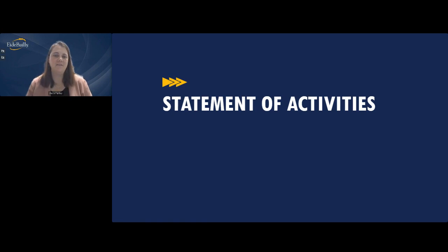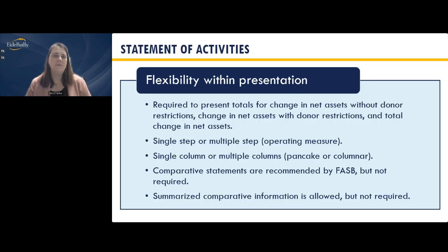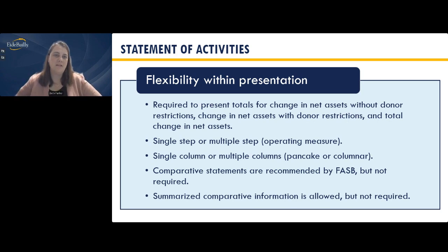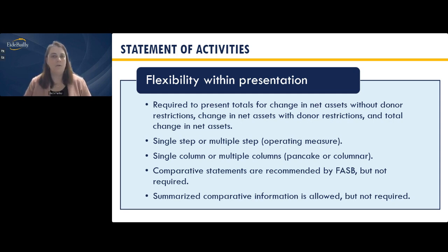The statement of activities has a lot of flexibility in presentation. You're required to present totals for net assets with and without donor restrictions and the changes therein, but the format is otherwise flexible. Options include single-step or multi-step — whether to show an operating measure — and single column or multiple column, sometimes referred to as pancake or columnar. Comparative statements are recommended by FASB but not required. A summarized comparative is also allowed but not required.